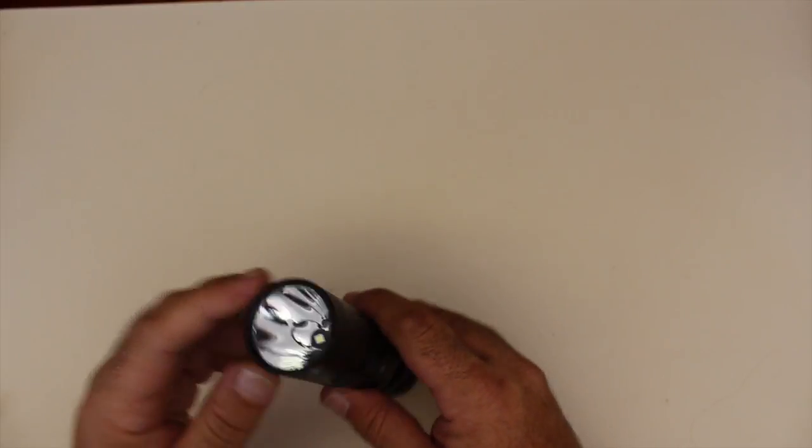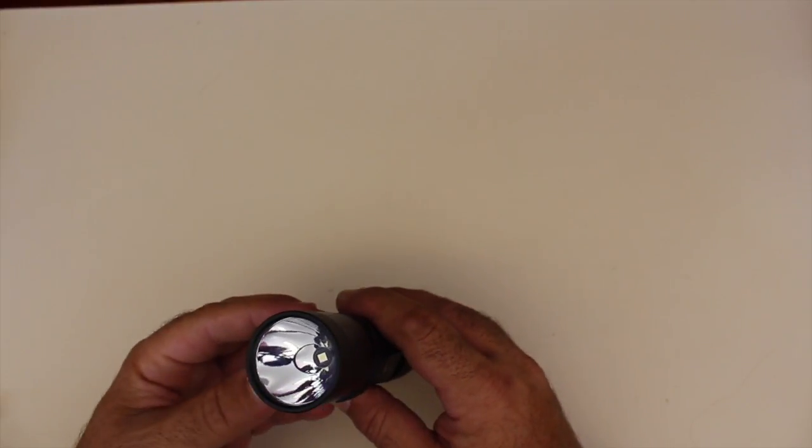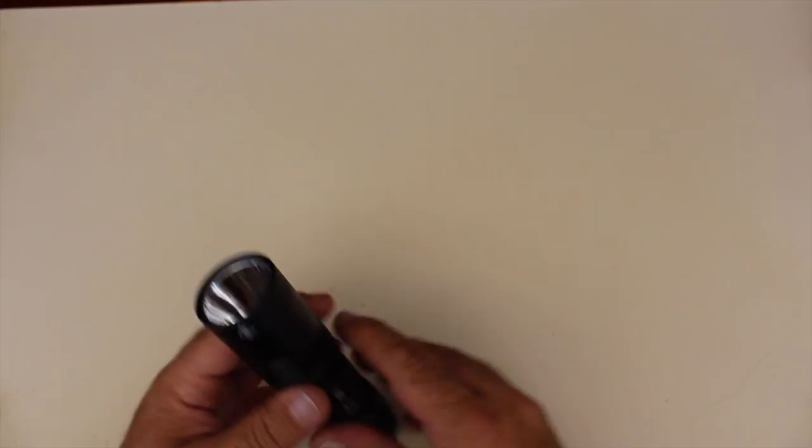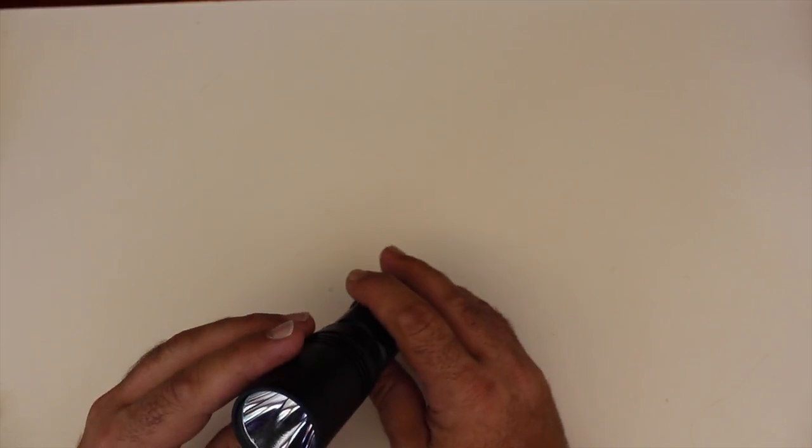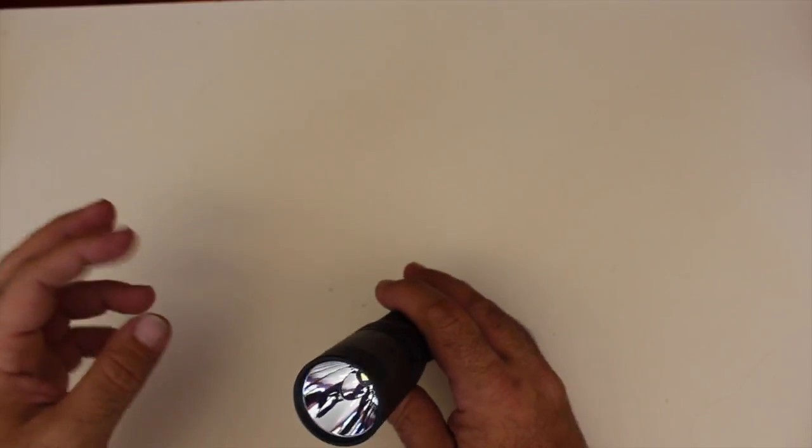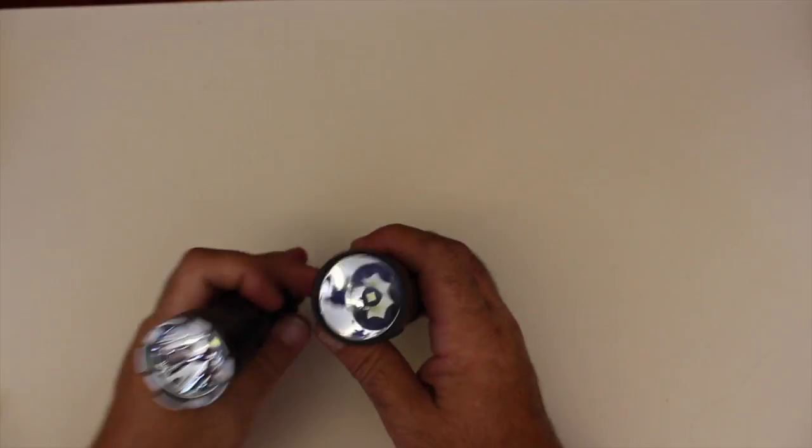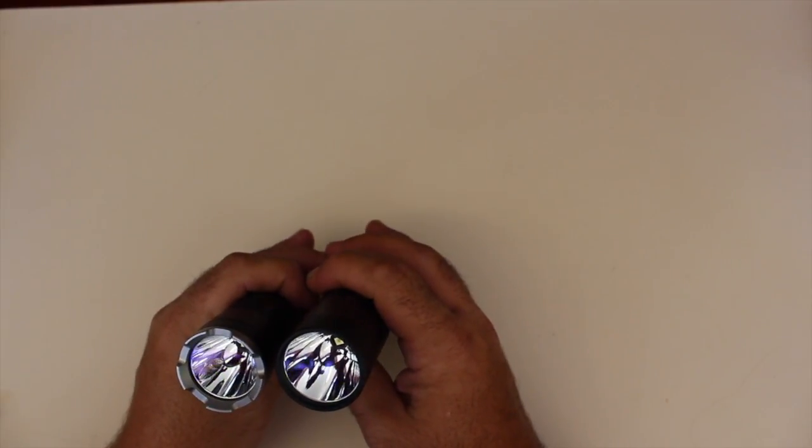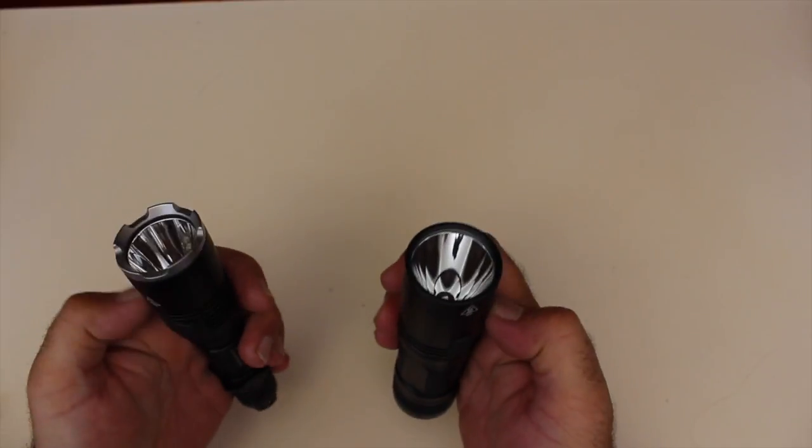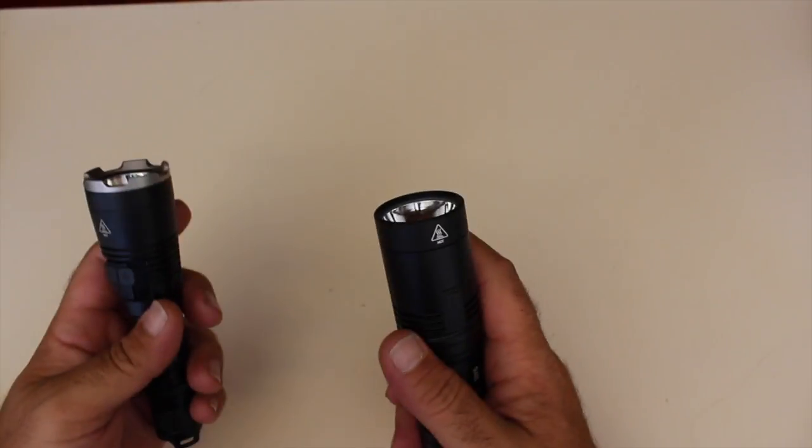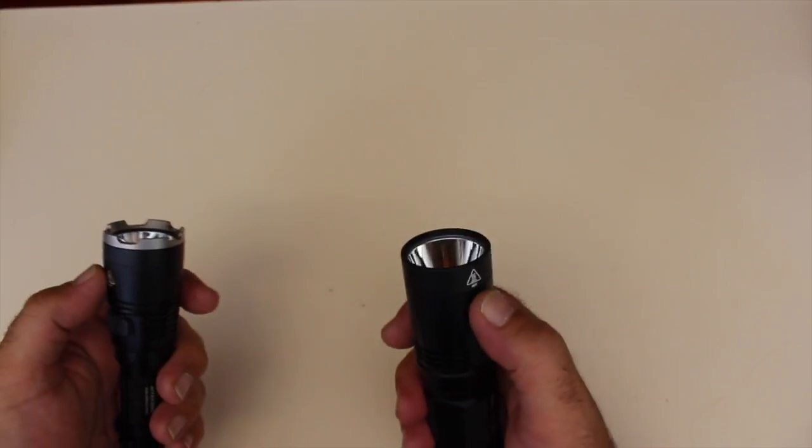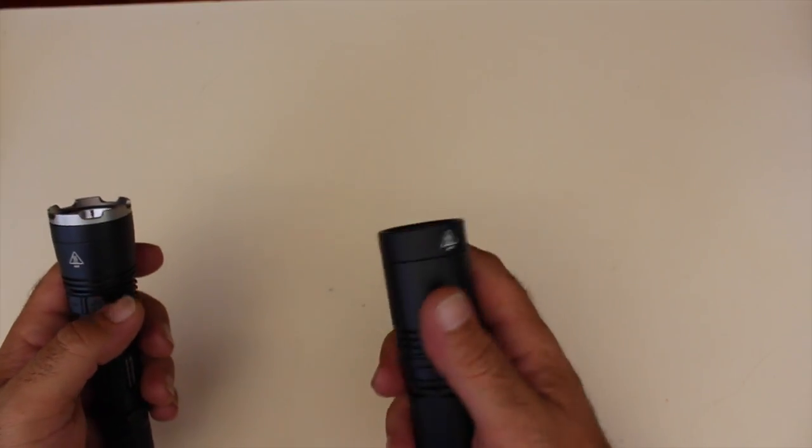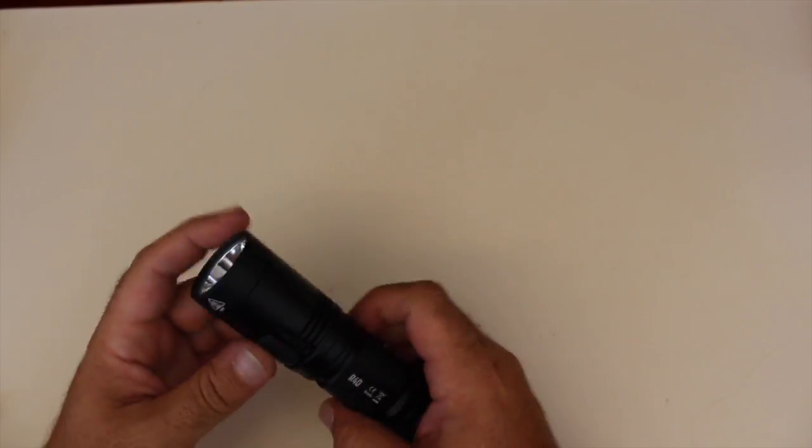Another thing you'll notice on the R40, it has slightly deeper optics. This is what gives it its 520 meter throw at 1000 lumens. If I compare it to the MH27, although the heads are 40mm the same, you'll see that the optics are slightly deeper, and you will notice the difference in the throw length that you'll get from the R40.